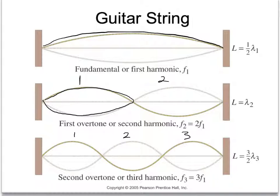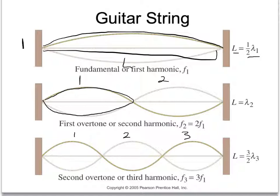Every object has natural frequencies or harmonics at which it will vibrate. The first harmonic is called the fundamental harmonic — it's the one that an object will most easily vibrate at. For the picture of the guitar string here, this is its first harmonic. We can also figure out the wavelength of that harmonic if we know the length of the guitar string. If we said the guitar string is length L, then for the first harmonic L equals half of the wavelength, or 2L equals lambda 1.